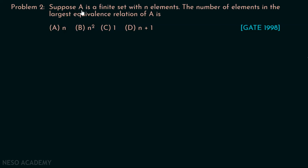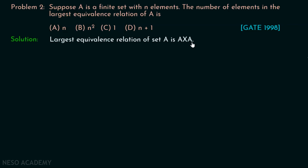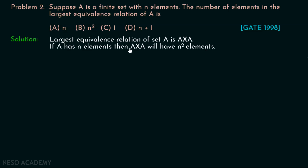It's quite a simple problem. A is a finite set with n elements, and we need to find the number of elements in the largest equivalence relation of A. The largest equivalence relation of set A is A cross A — the Cartesian product of A with itself. If A has n elements, then A cross A will have n squared elements. Therefore, option B is the correct option.